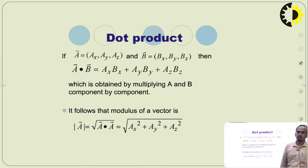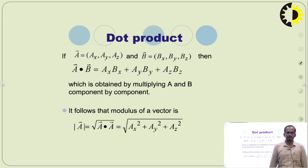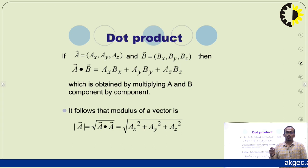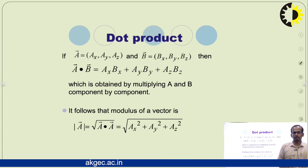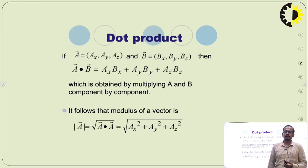What is dot product? If vector A is defined as (Ax, Ay, Az) and vector B is defined as (Bx, By, Bz), then the dot product A·B equals Ax·Bx + Ay·By + Az·Bz. This is obtained by simply multiplying the corresponding components of vectors A and B. The dot product can also be written as A·B equals mod A times mod B times cos θ.